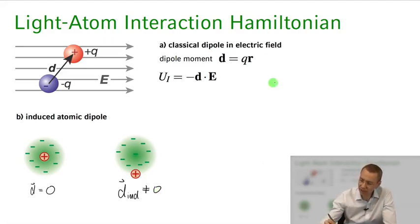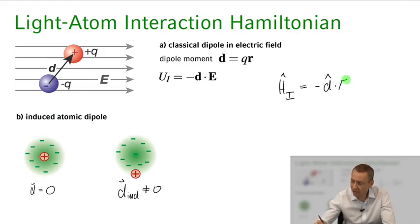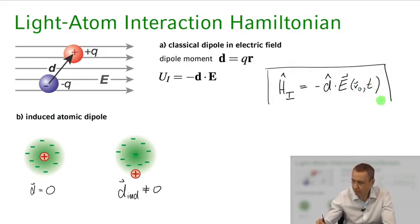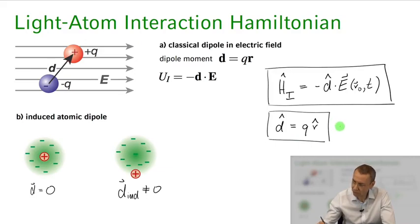This leads us to the intuition of how we can define the quantum mechanical interaction Hamiltonian of an atom with a light field. That's just the dipole operator, which tells us the dipole moment that's present in an atom, times the electric field at the position of the atom at time t. This is our fundamental starting point for the subsequent lectures. The dipole operator d is just q, the charge of the electron, times the position operator of the electron.